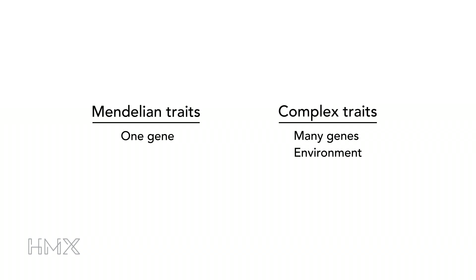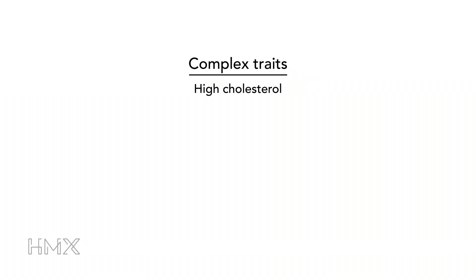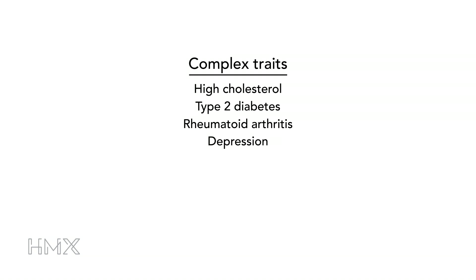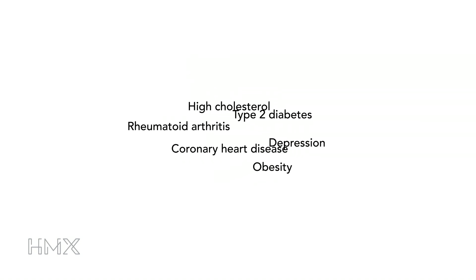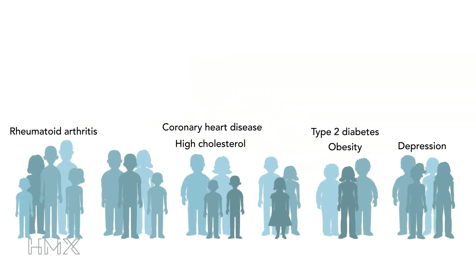Mendelian conditions are rare and often quite severe, but complex traits like high cholesterol, type 2 diabetes, rheumatoid arthritis, depression, coronary heart disease, and obesity are more common in the population. Many families seem to have a high incidence of one of these traits, indicating that they have one or more risk variants for that condition.